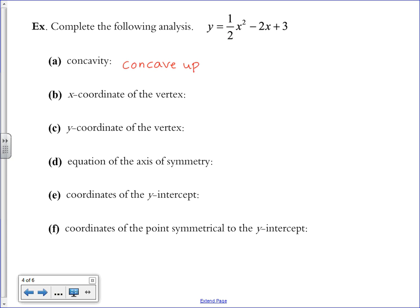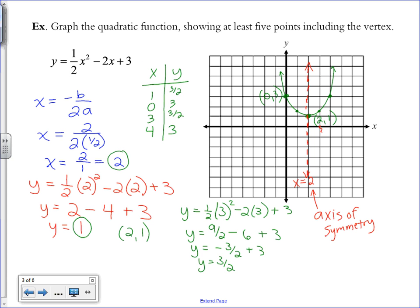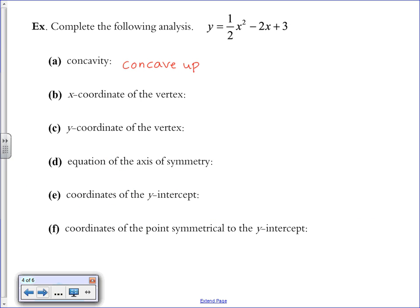It asks for the x coordinate of the vertex. Remember that we got that by doing negative b over 2a. The x coordinate of the vertex came out to positive 2. The y coordinate of the vertex came out to positive 1 when we took our 2 and plugged it back into the function.